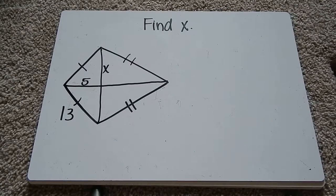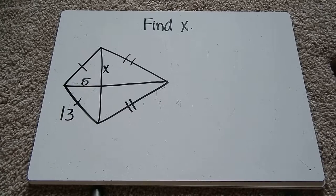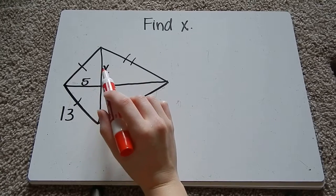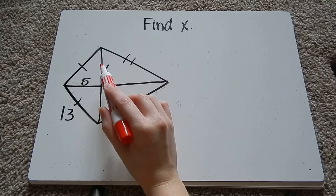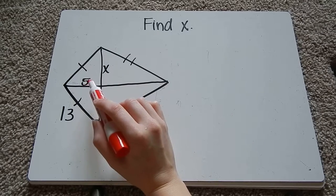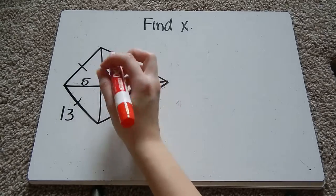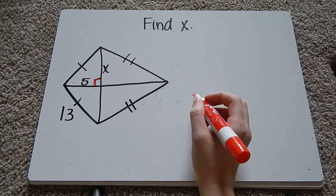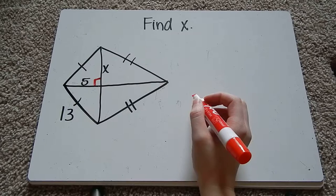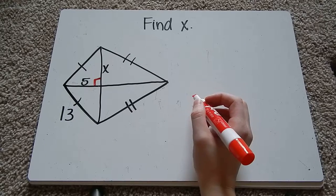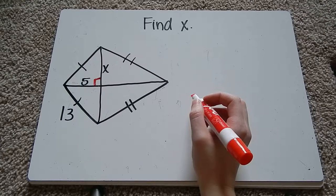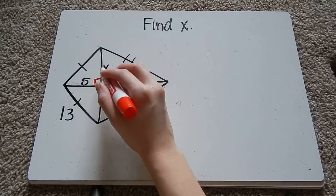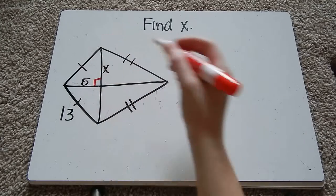So here's the first one. It says find x. So if you notice that this kite when you draw the diagonals it splits it into four right triangles because all these are right angles. So since we have right triangles we want to use properties of right triangles to solve for things. So what we need to do is figure out x by using Pythagorean theorem.